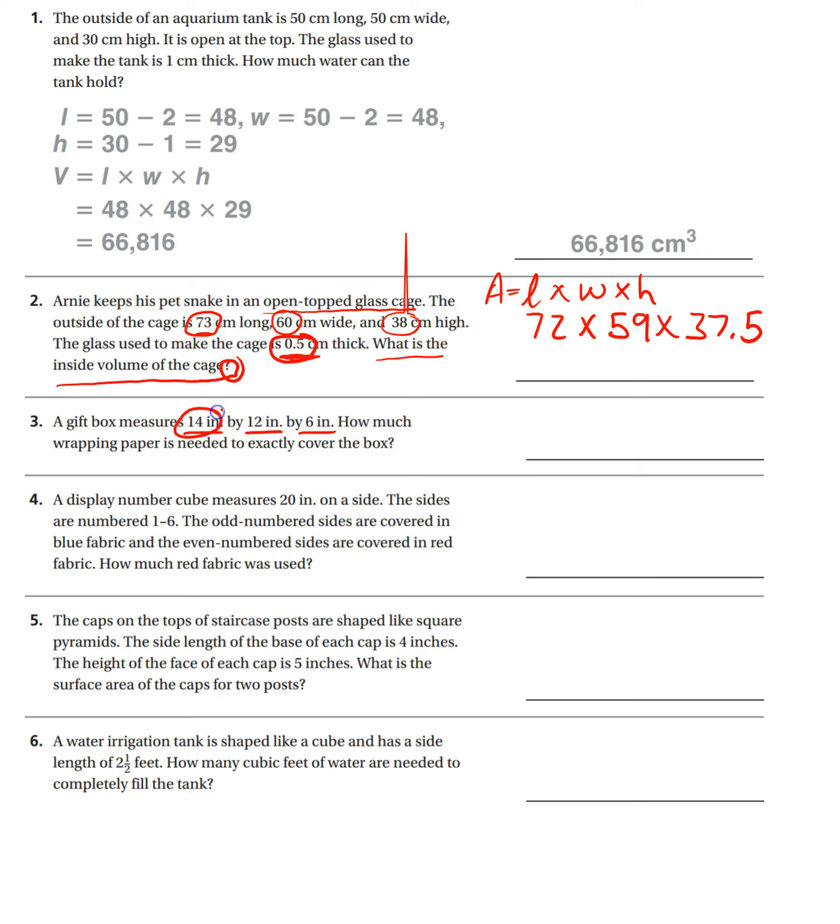Okay, so you need to multiply the 14 by the 12 and the 14 by the 6. Then you need to multiply the 12 by the 6. And then add those all up. So 14 times 12, get that answer, 14 times 6, get that answer. Oh, and multiply by 2. I almost forgot. So 14 by 12, and then there's a front and a back, so then multiply by 2. Then 14 by 6, get that answer, and then multiply that by 2 because there's a right and a left. And then 12 by 6, get that answer, multiply it by 2 because there's a top and a bottom. Then add these three answers up and that will be your final answer.